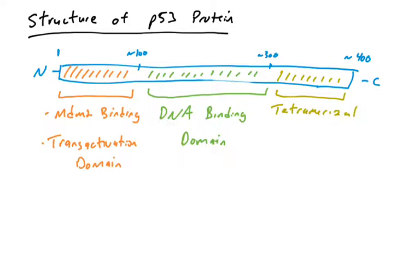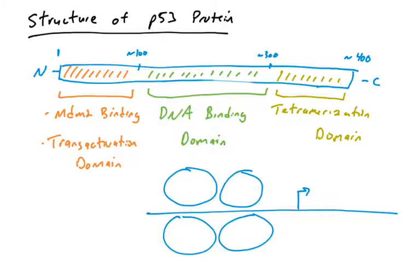Finally, the last 100 amino acids contains the tetramerization domain of p53, which allows p53 to interact with other p53 proteins. When we consider where the domains are located in the folded tetramer, each p53 has a DNA binding domain in contact with specific nucleotides in the promoter, all four interact with the DNA. All four have tetramerization domains binding the other p53 molecules, and all four have a transactivation domain to recruit RNA polymerase machinery and turn on the gene.